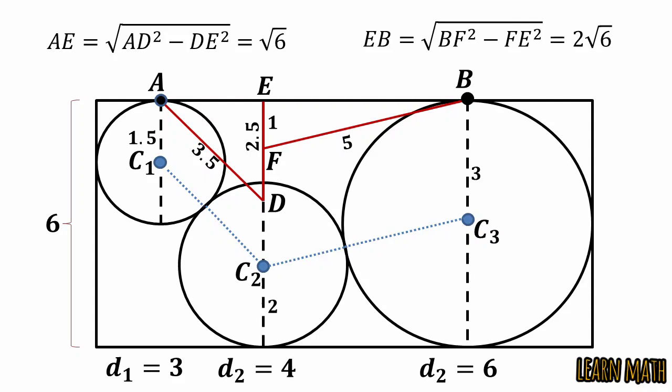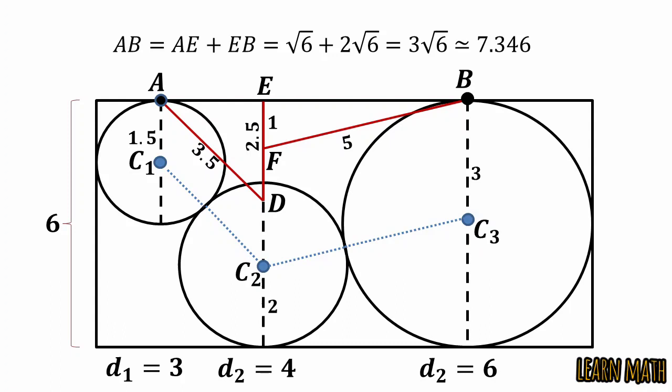So AB is equal to AE plus EB, that is equal to 3 root 6, which is approximately equal to 7.346, and this is the required length of AB.